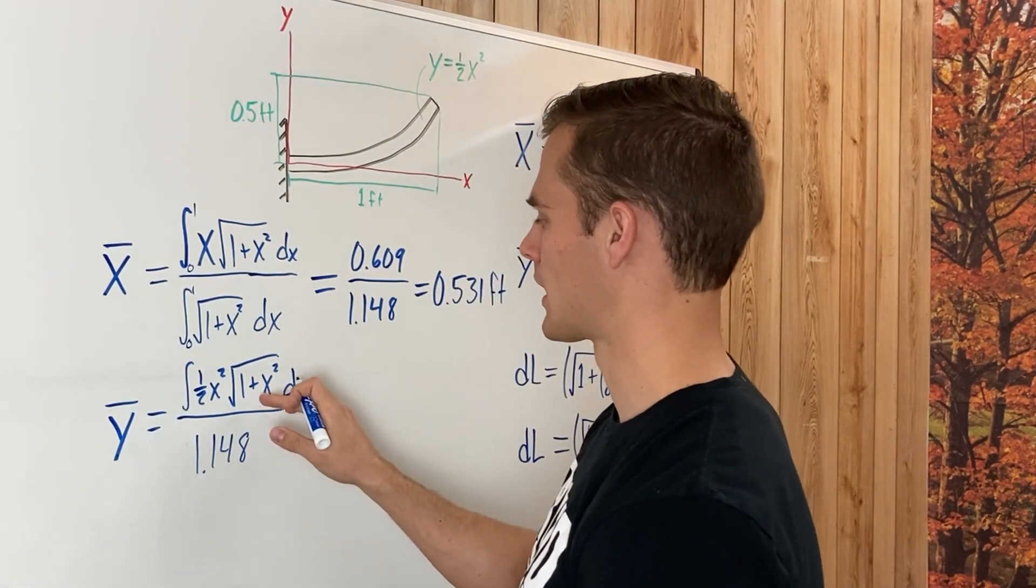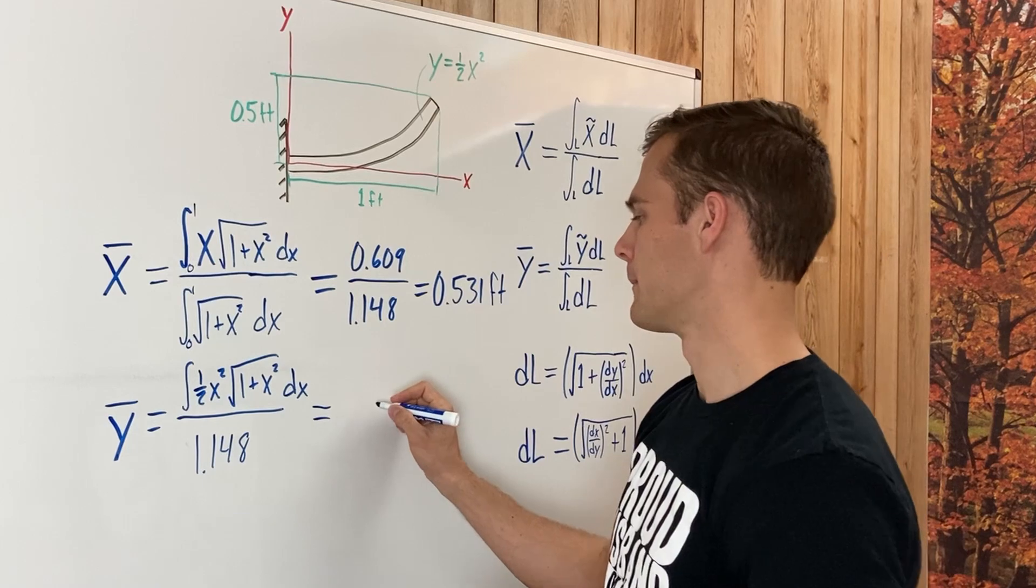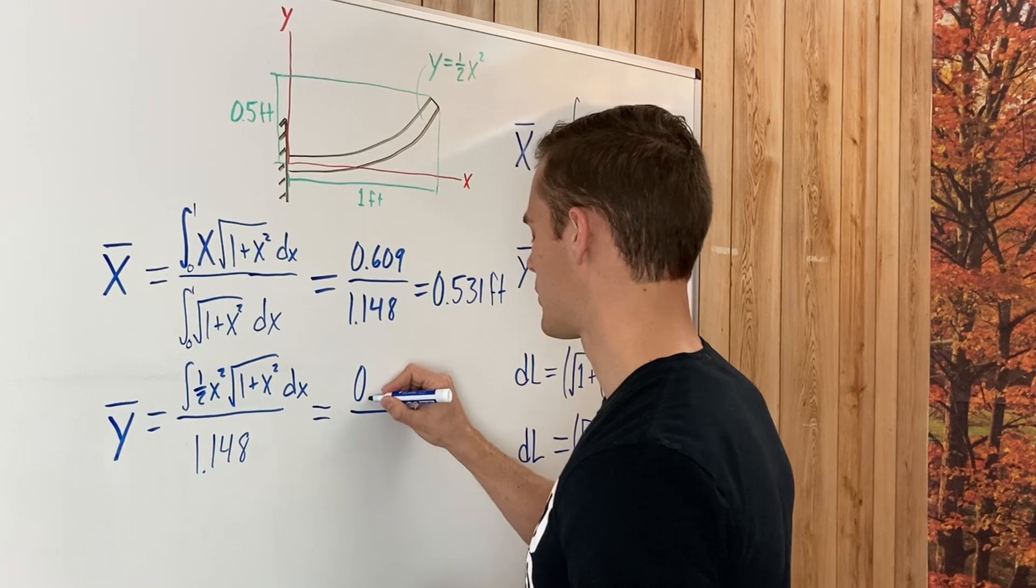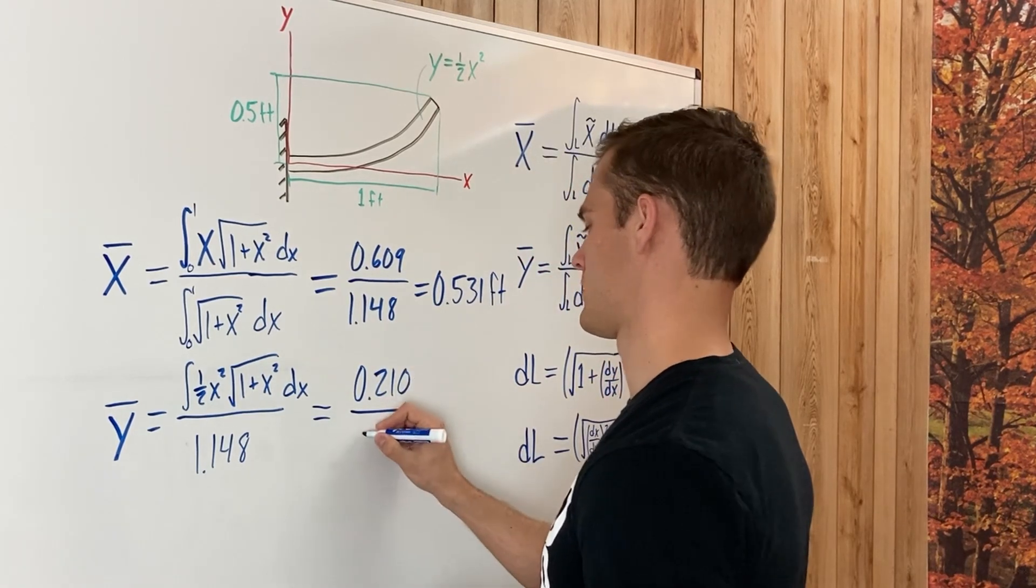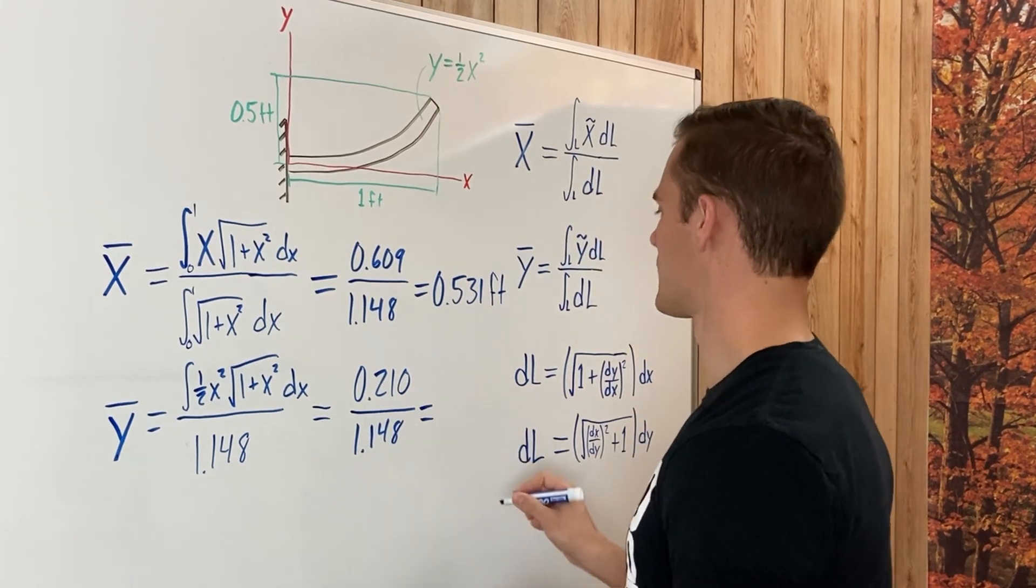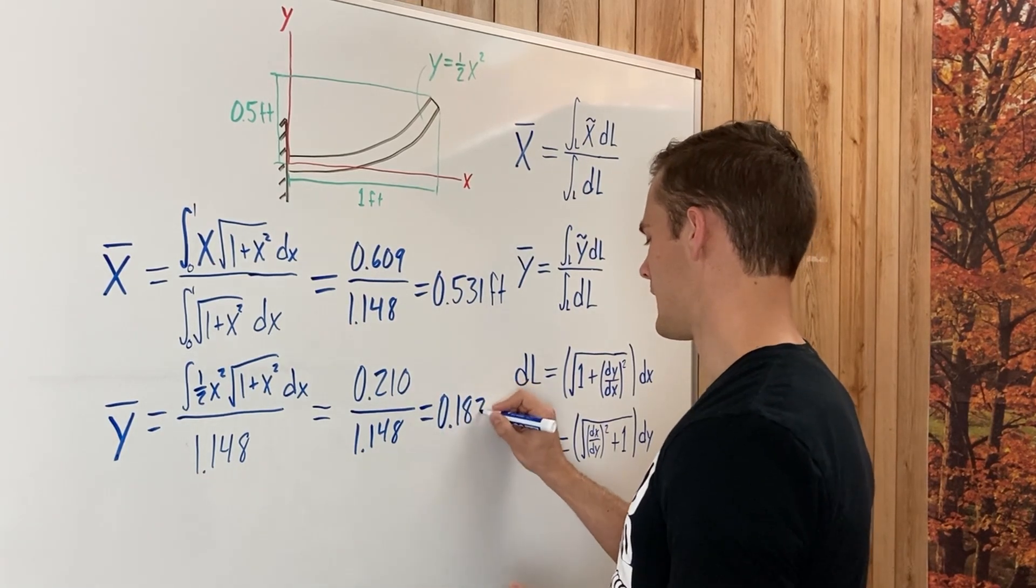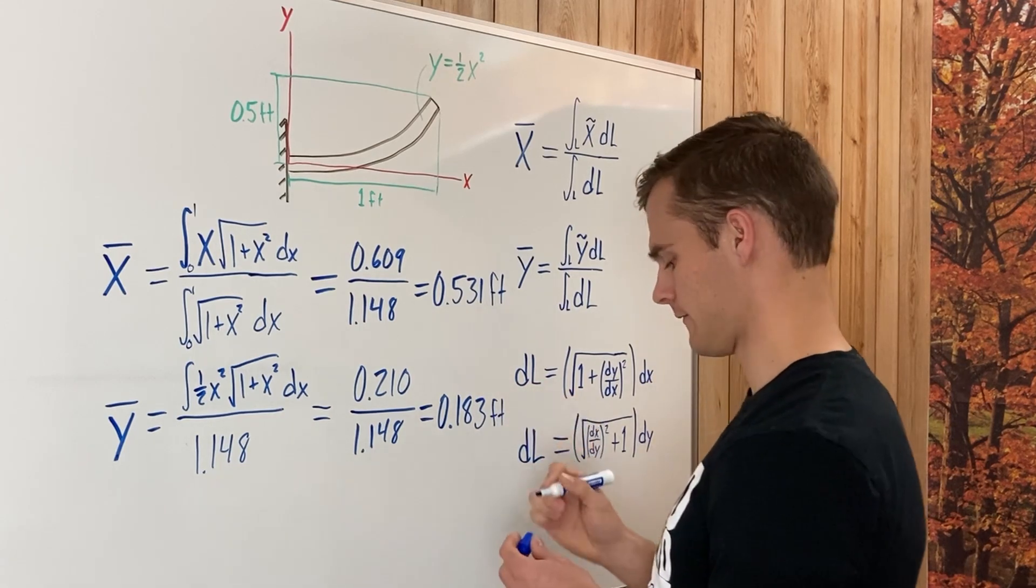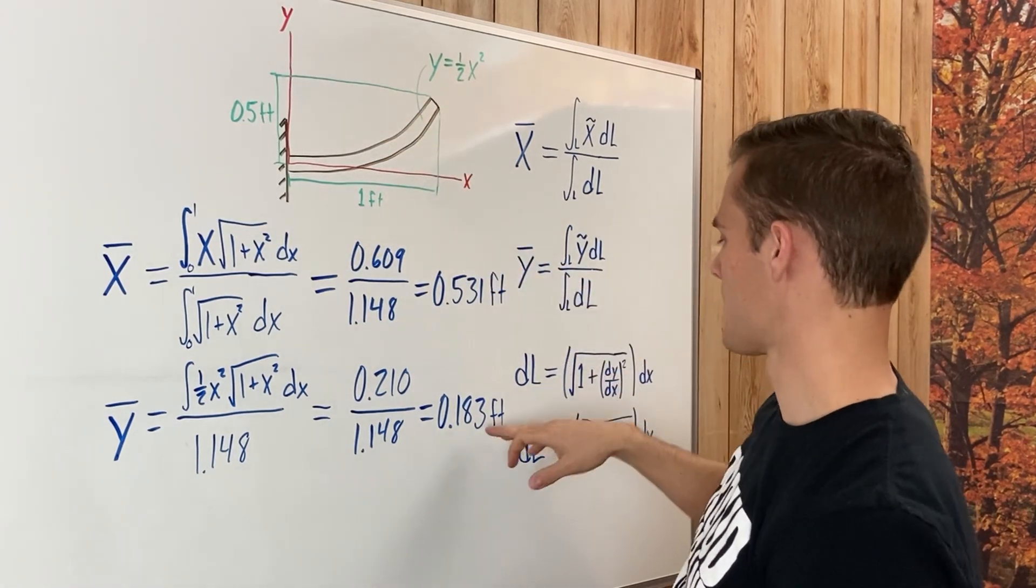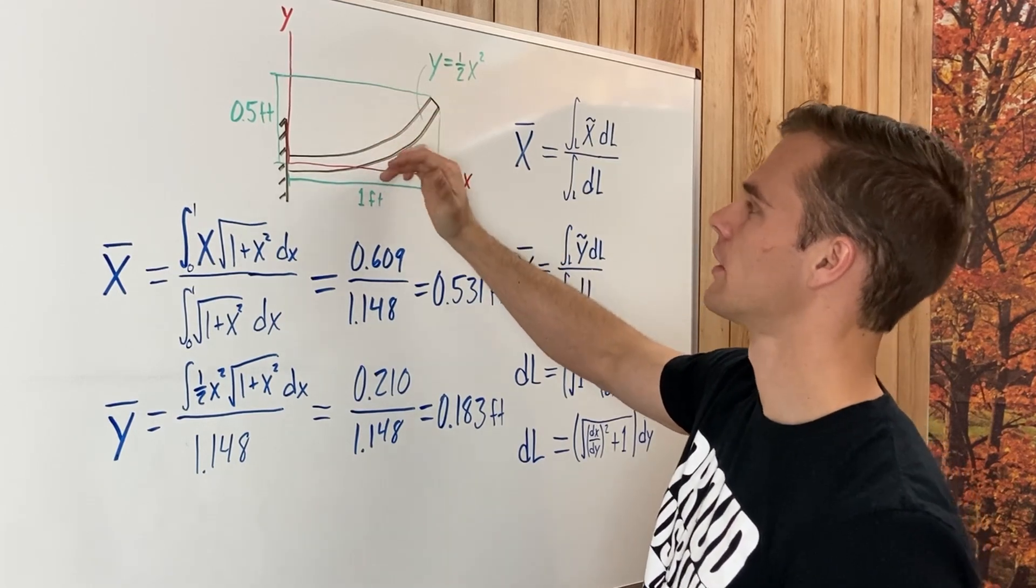So, that's an even more complicated integral. You'd probably use integration by parts if you're doing that by hand. But plugging it into your calculator, you end up getting that this is 0.210, and the bottom is still 1.148. Plugging that into your calculator, you're going to get that is 0.183. Once again, that is feet. So, the center of gravity along the y-axis is 0.183 feet from the x-axis, so going up along the y-axis.